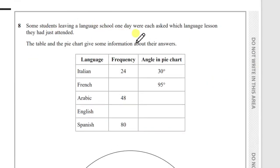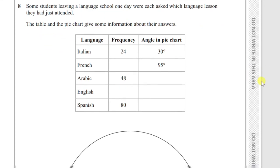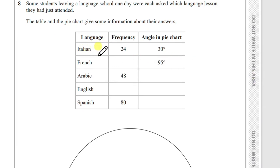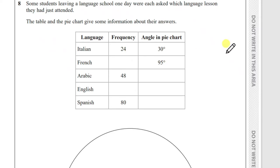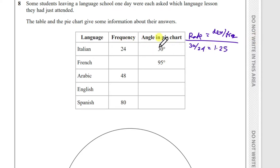Question 8: students leaving a language school were asked which lesson they attended. Italian: 24 students = 30°. Use the ratio 30/24 = 1.25 as the conversion rate between frequency and angle. To find French frequency: 95° ÷ 1.25 = 76 students. Arabic (48 students): 48 × 1.25 = 60°. Spanish (80°): 80 × 1.25 = 100 students.